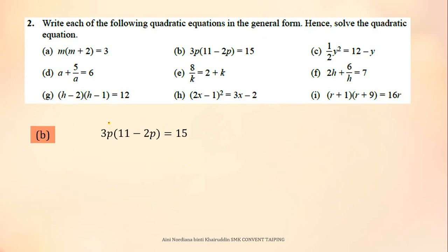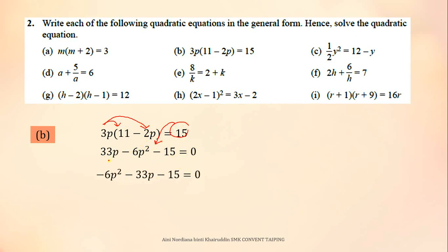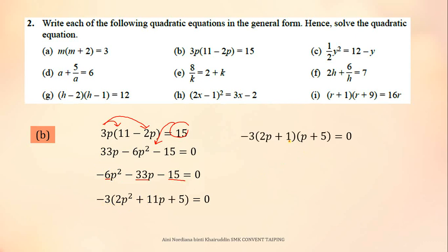For B, first expand the expression, then transfer 15 to the left side. Rearrange into the form AX squared plus BX plus C, because it is not yet in general form. Once in general form, you can factorize. Look at the numbers — first pick out 3, then factorize inside the bracket using your calculator. The values of P are negative 1 over 2 and negative 5.